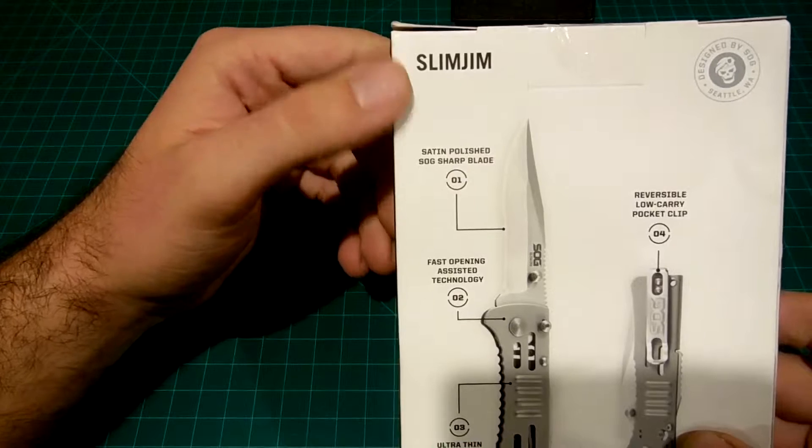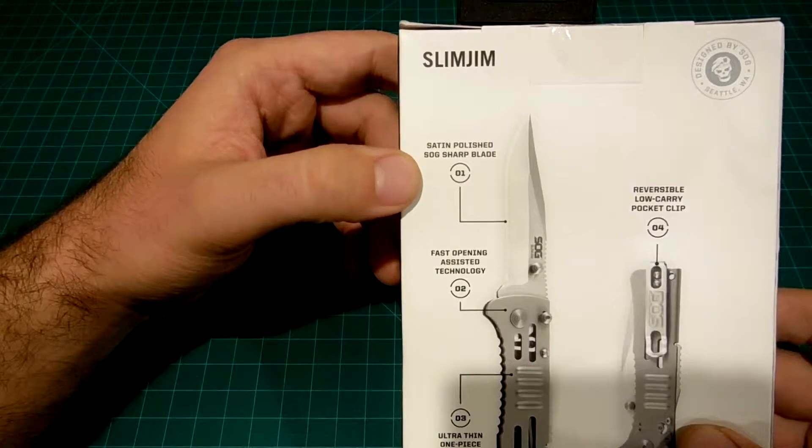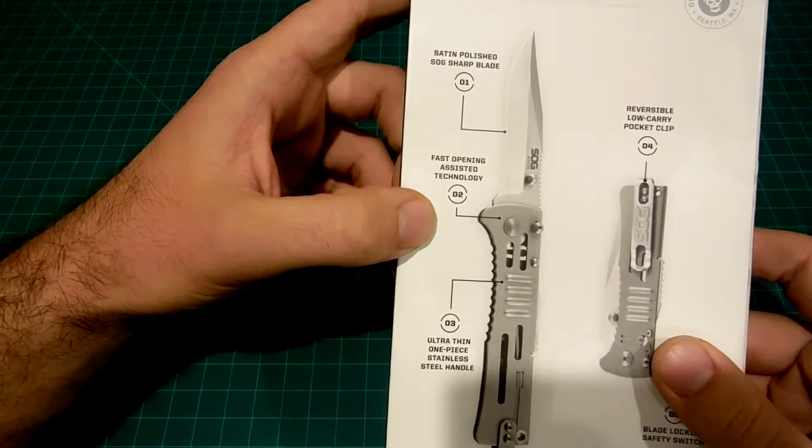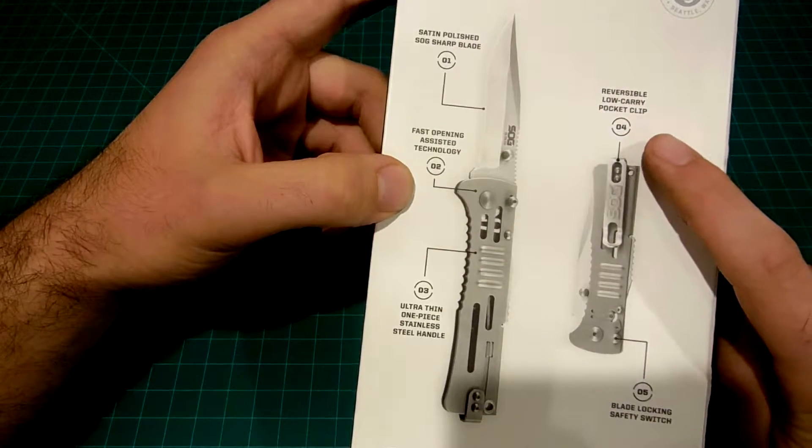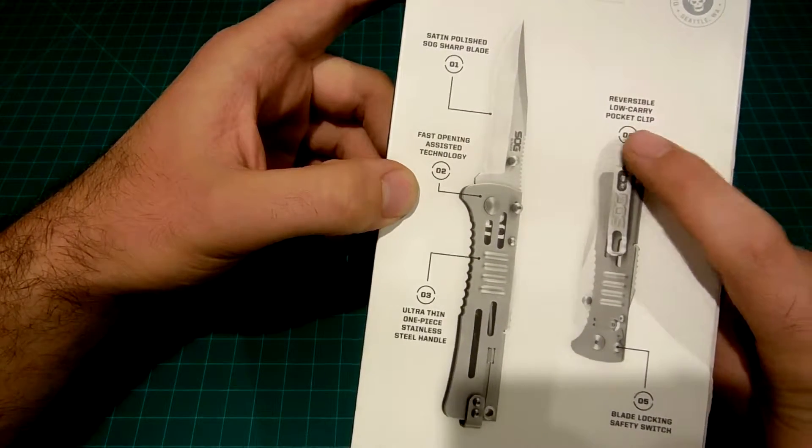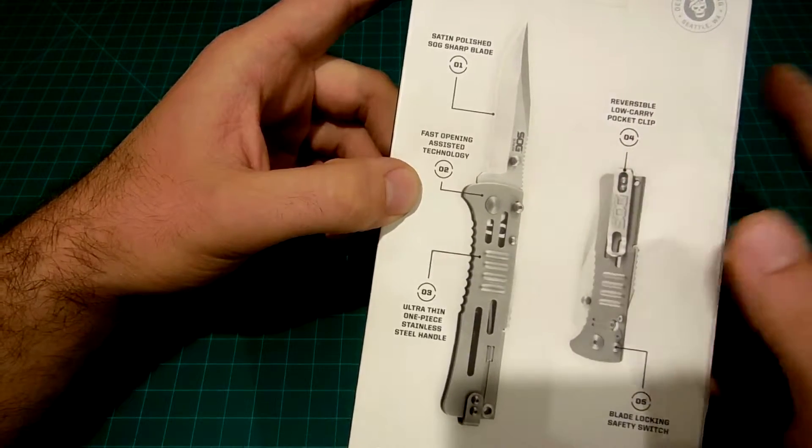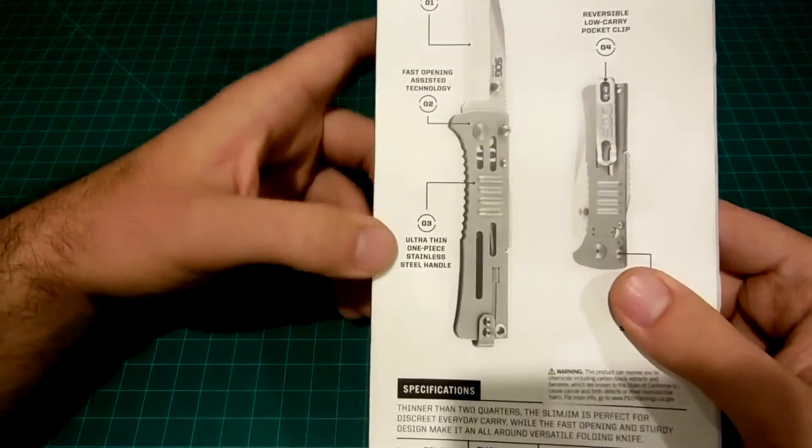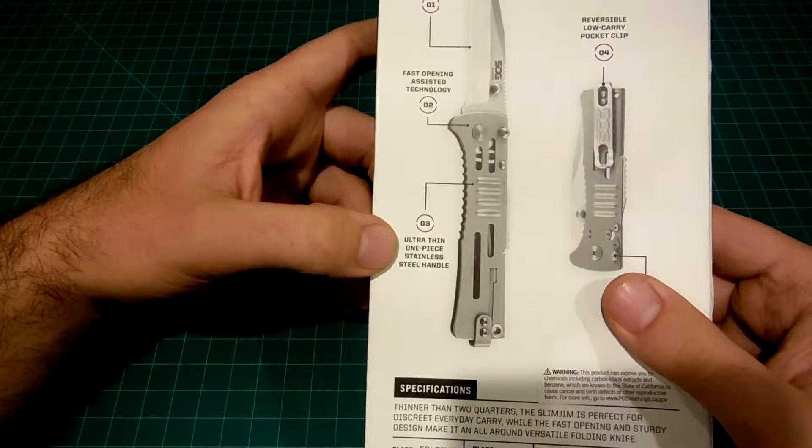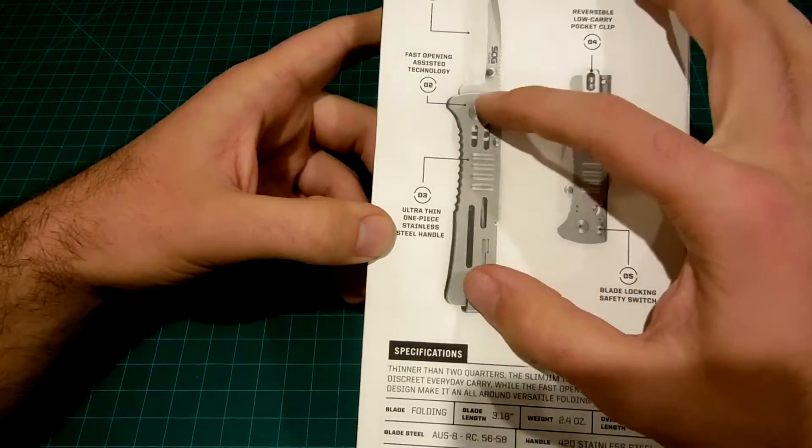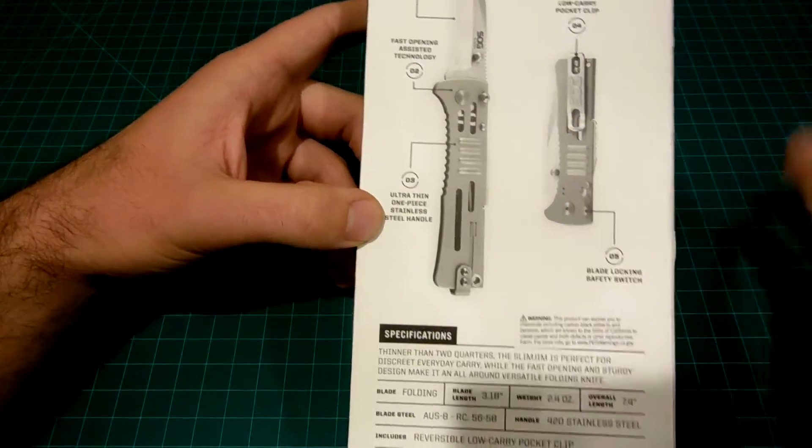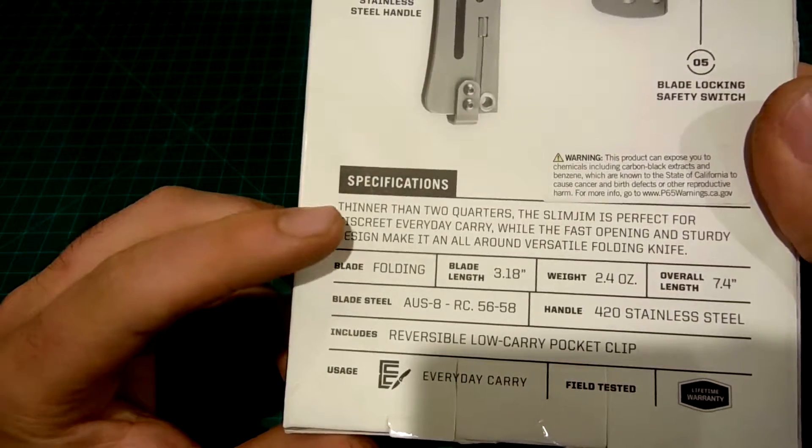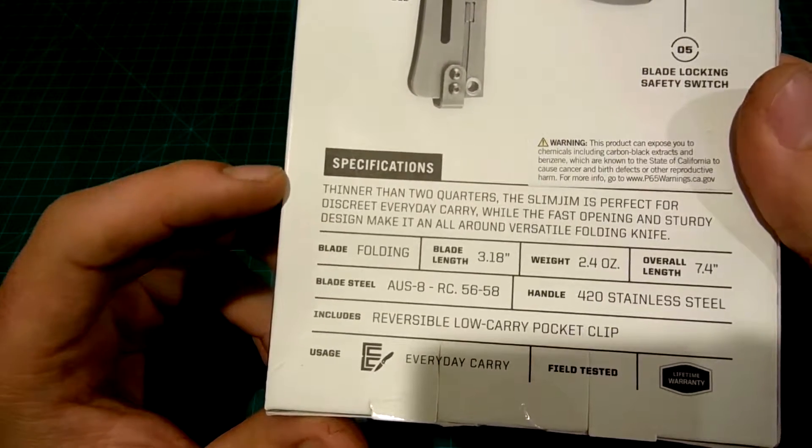On the back we have Slim Jim satin polished SOG shape, SOG sharp blade, fast opening technology. This is what I really like - low carrying pocket clip, reversible, that's a big plus for me. We're gonna check that out right now.